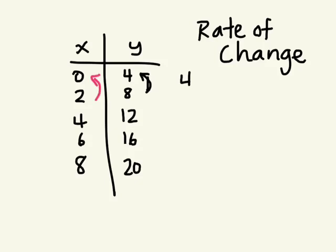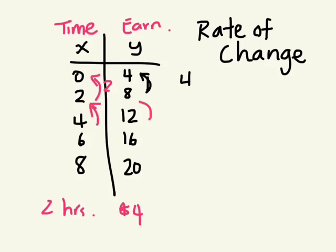So what would be the rate of change? If this is changing by 4 and this is changing by 2, what's the rate at which it's changing? Let's say for every 2 hours, you earn $4, right? This is what the table shows. For every 2 hours, you're earning $4.